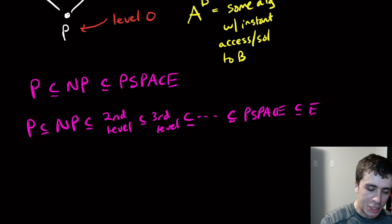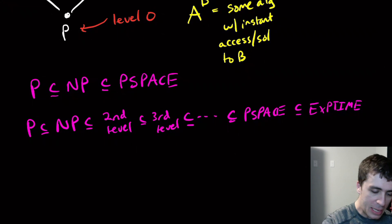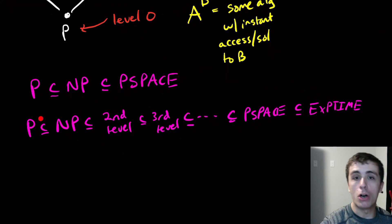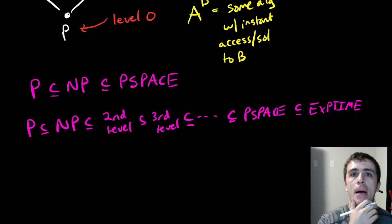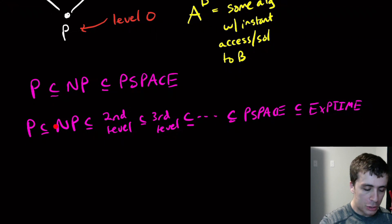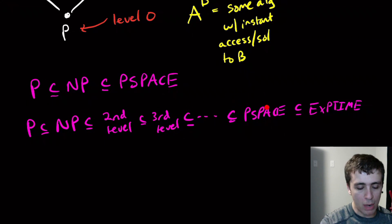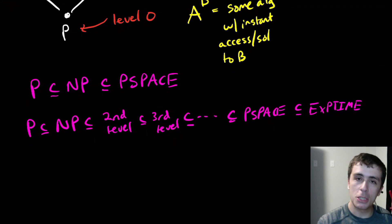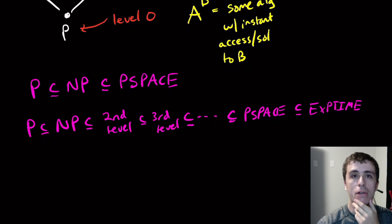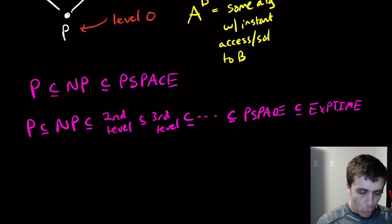None of these inclusions are known to be strict, because we don't even know if P is different from PSPACE. We do know that P is different from exponential time — provably, by the time hierarchy theorem — so at least one of these inclusions is strict, but we don't know which one.